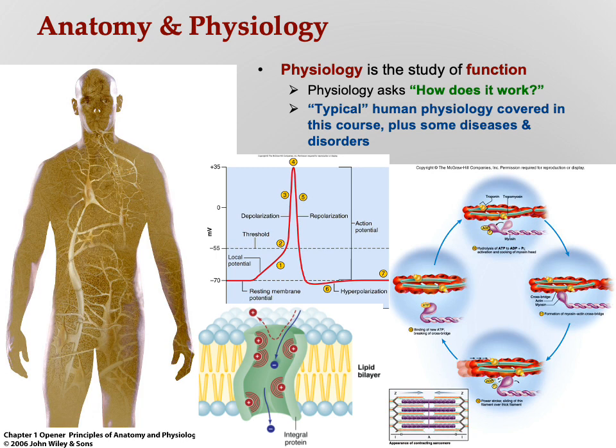Anatomy is mostly just memorization of names; physiology is actually understanding processes. Anatomy is generally the much easier part of the class — physiology is what people tend to struggle with a little more. On the right you see a graph of an action potential — that's a nerve impulse. We'll know all about that later this semester — you'll be able to label all those parts and tell me exactly what each one is.